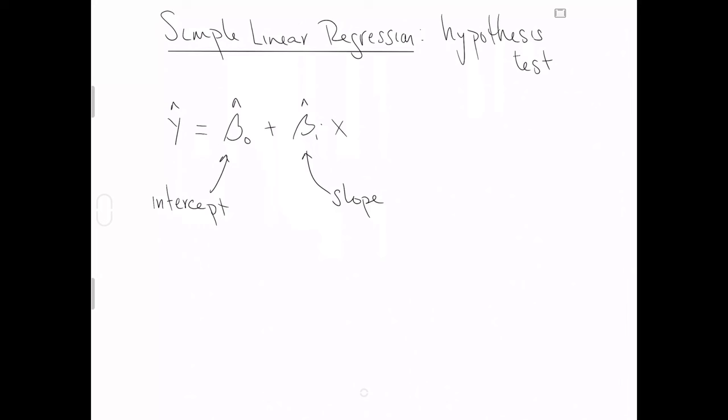Beta naught with a hat on it as estimated from the data is the intercept. And beta 1 is the slope with a hat on it to say we are going to estimate whatever the population slope is from the data we have.